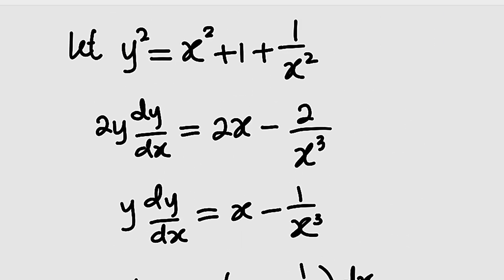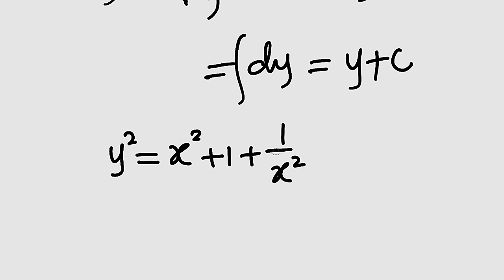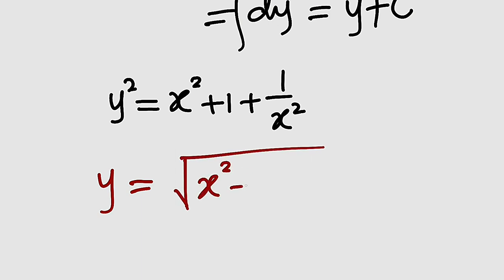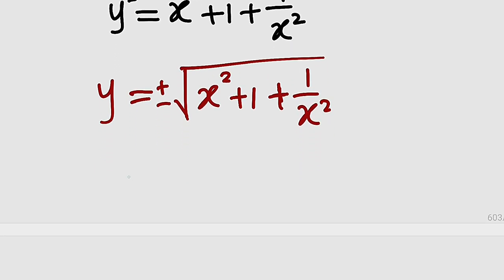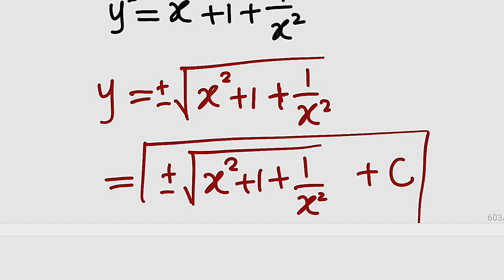But what is y? We know that y squared equals x squared plus 1 plus 1 divided by x squared. Therefore, taking the square root of both sides, y equals the square root of x squared plus 1 plus 1 divided by x squared. You can attach plus or minus here. Therefore, our solution is plus or minus the square root of x squared plus 1 plus 1 divided by x squared, plus the constant of integration. This is the solution to our problem.